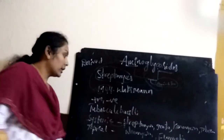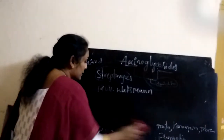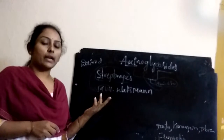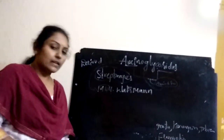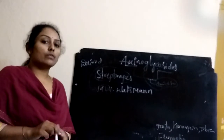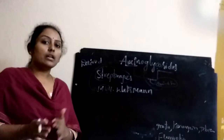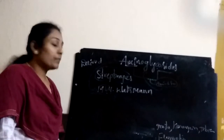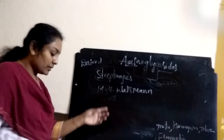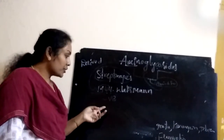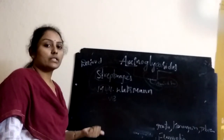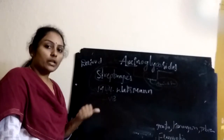Regarding the spectrum of activity of aminoglycosides: they have broad spectrum activity, mainly inhibiting bacterial cell wall synthesis. They are active against gram positive and gram negative bacteria, particularly gram negative bacteria. They also act against tuberculosis bacteria, specifically Mycobacterium tuberculosis, and tularemia.